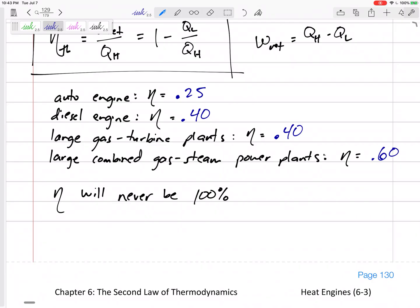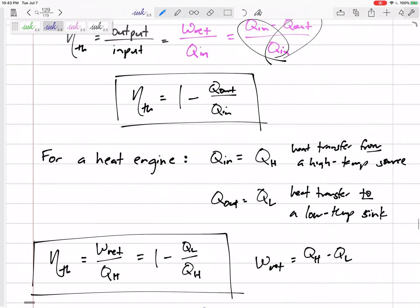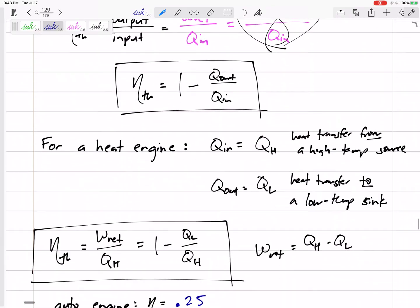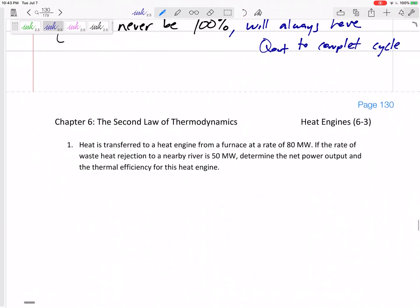We will always have that Q_out, that waste, to get back to where we started from. To complete the cycle we'll always have Q_out. We've got equations here that we can use in finding thermal efficiencies, finding the heat transfer, and finding the net amount of work that we can get out depending on what sources and sinks we have.